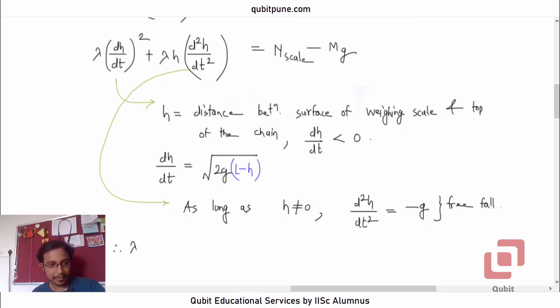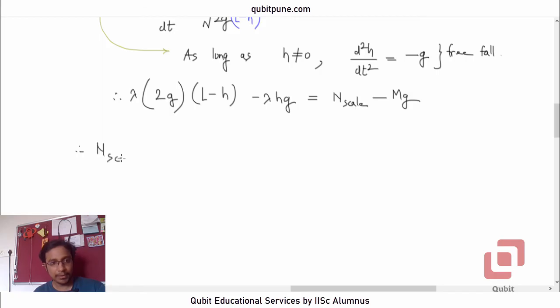Therefore, lambda times 2g(l minus h) minus lambda h g equals N_scale minus mg. So N_scale will be mg plus 2g lambda l minus 2g lambda h minus lambda h g. Let us open this and the second term will be negative 2g lambda h, and the third term will be negative lambda h g.